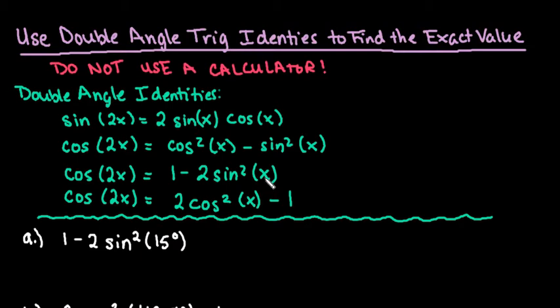Hi, for this video what I want to do is use double angle trig identities to help find exact values. We are not going to use a calculator in this video. We are going to use the unit circle to help us find the values that we are looking for.